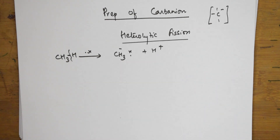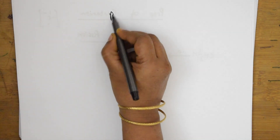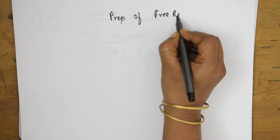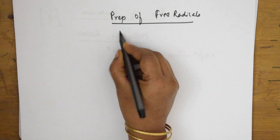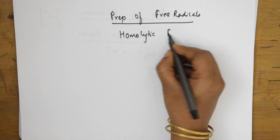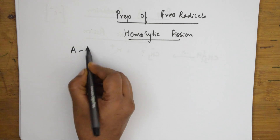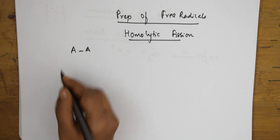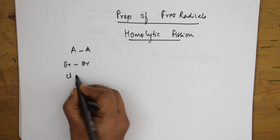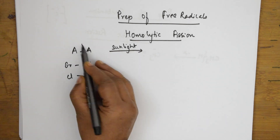Now let's see the preparation of free radicals on the next page. Free radicals are very short-lived species. Here I'll be showing free radical formation from different examples. I'll be speaking about the formation of free radicals in homolytic fission. Homolytic means between two similar atoms — homo means both atoms will be similar. For example, Br–Br or Cl–Cl — both atoms are similar.